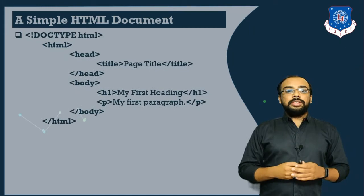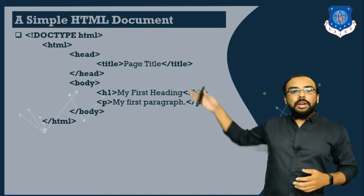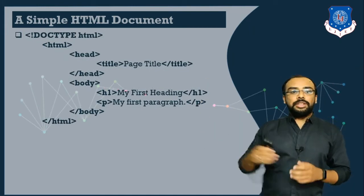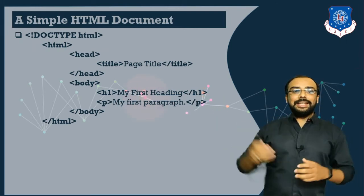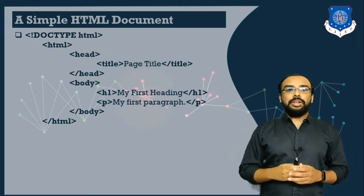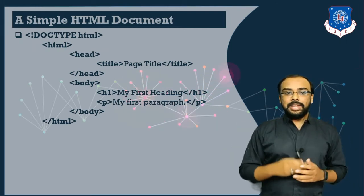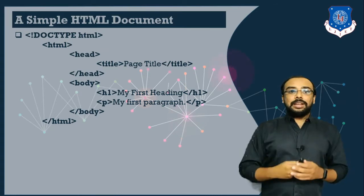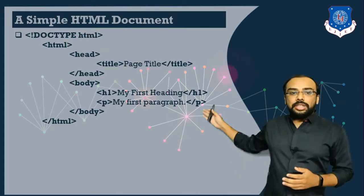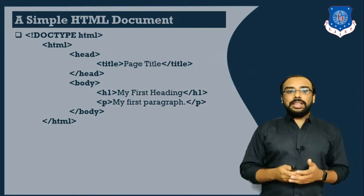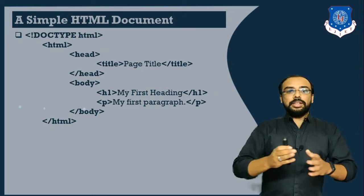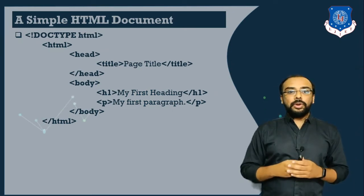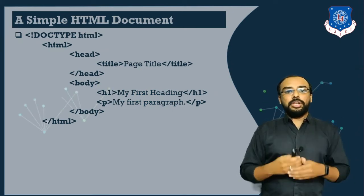Here you can see a particular HTML document. The first thing you can see is inside an angular bracket it is written doctype HTML. This tag is optional. The next tag is HTML. Let us first understand the structure and then we will understand the importance of each particular tag.